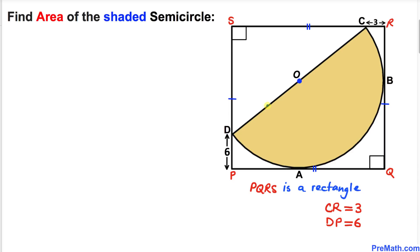Welcome to pre-math. In this video lesson we have got rectangle PQRS such that a semicircle whose center is O is inscribed inside this rectangle, as you can see in this diagram, such that A and B are the points of tangency. Furthermore, this distance CR is 3 units and this distance PD is 6 units, and now we are going to calculate the area of this shaded semicircle.